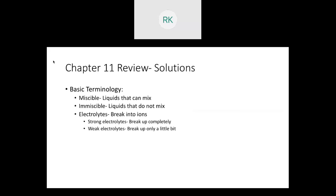Jumping into our final review: Chapter 11 covers colligative properties and solutions. Some basic terminology from the beginning of the semester — miscible versus immiscible fluids. Miscible means able to mix — both start with M. Miscible fluids completely mix together and you can't tell them apart. Immiscible liquids do not mix.